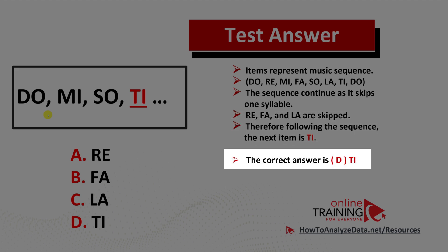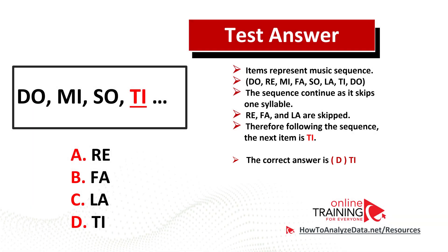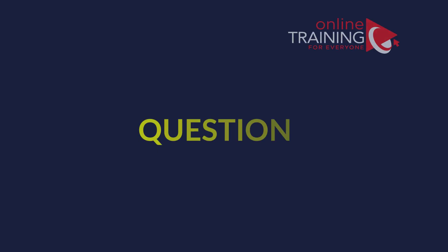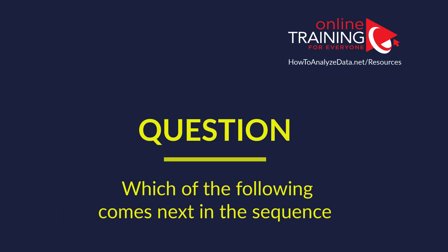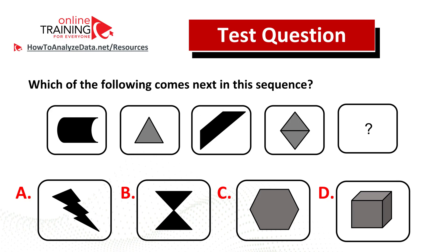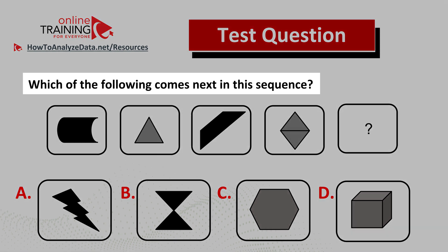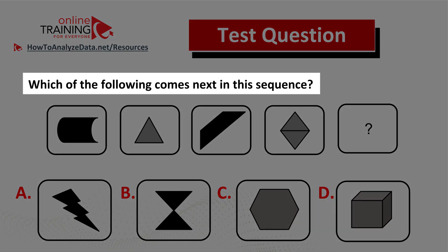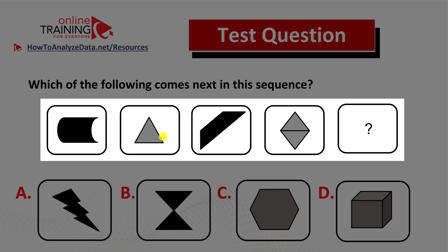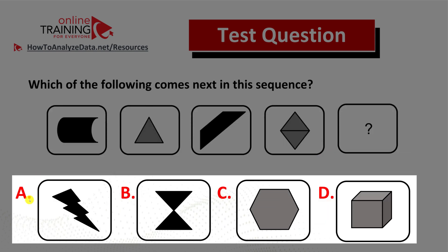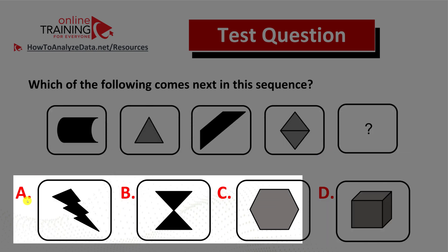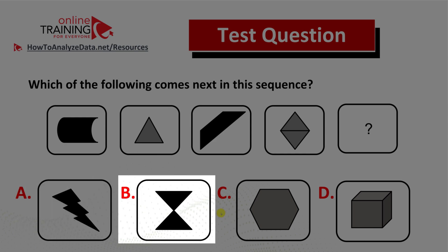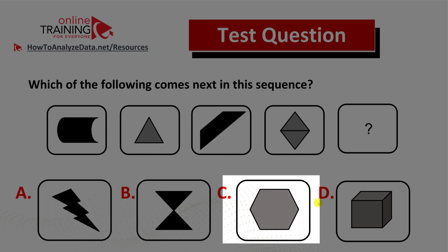Hopefully you've nailed this question and now know how to answer these types of questions on the test. Here's an interesting and tricky question from the real test. Which of the following comes next in this sequence? You have a sequence of four shapes displayed and a fifth shape with a question mark, which you need to pick from four choices. Choice A: lightning. Choice B: sand clock. Choice C: hexagon. And choice D: cube. Do you think you know the answer?